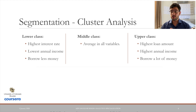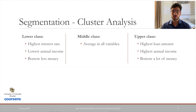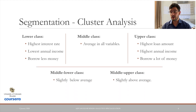For example, the lower class pays the highest interest rate and borrows the least amount of money. On the other hand, the upper class has the highest annual income and pays a reasonable interest rate. And in between these clusters, there are two others, which were classified as middle-lower and middle-upper classes.